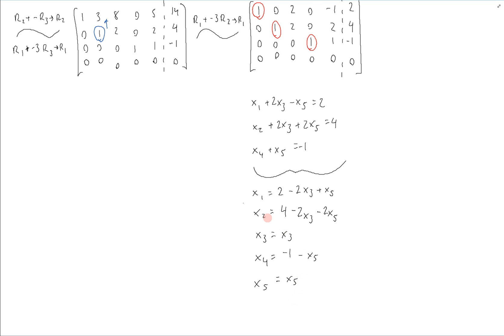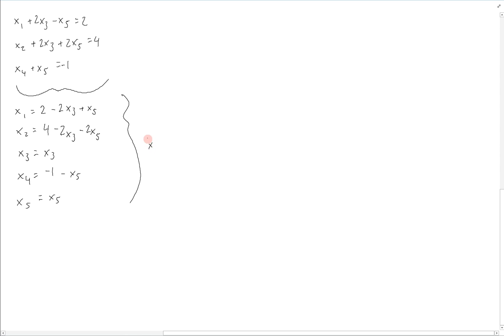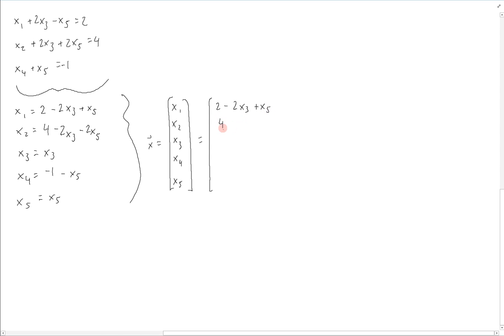From this, we can start writing things in the parametric vector form by writing this out as a solution set for a single vector x, which equals its components from x1 to x5. That is equal to: 2 minus 2x3 plus x5 for x1; 4 minus 2x3 minus 2x5 for x2; x3 for x3; negative 1 minus x5 for x4; and x5 for x5, which is a free parameter.